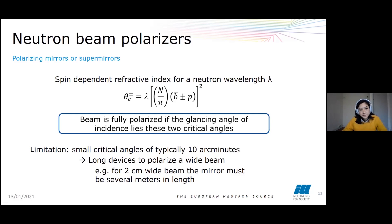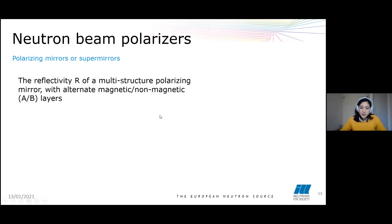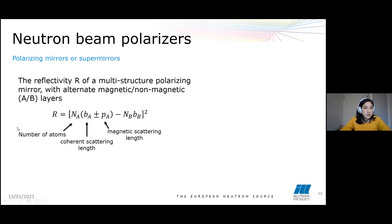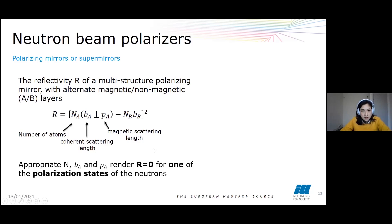Of course we want to optimize this, so I would like to introduce the reflectivity of a multi-structure polarizing mirror. By 'multi-structure' I mean a mirror with alternating magnetic and non-magnetic layers. The reflectivity is given by an equation that includes the number of atoms in the layers and the coherent and magnetic scattering length. If we choose the materials properly and define the thicknesses correctly, we can render a reflectivity of zero for one of the polarization states.